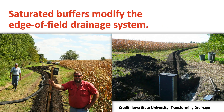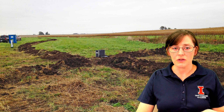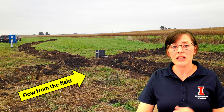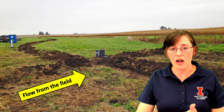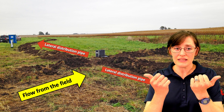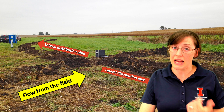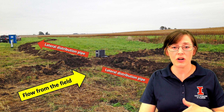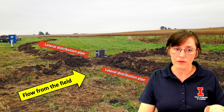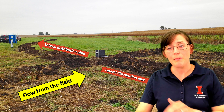The components of a saturated buffer are basically a control structure and the distribution tile. At this site, which is one of my own research sites, flow comes from the field underground in the tile pipe from the left of the screen. The tile drainage water runs into the stop logs in that control structure in the middle of the picture. Those plates or stop logs force the water to the sides into these two distribution pipes, which are just perforated tile pipe — meaning it has holes in it, as opposed to solid tile pipe. The distribution pipe is how the tile drainage water gets converted back into shallow groundwater inside the buffer. The water flows along the distribution pipe, seeps back out into the soil, and then flows by the natural gradient back to the stream.